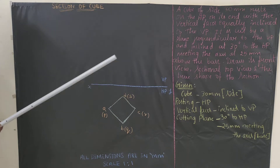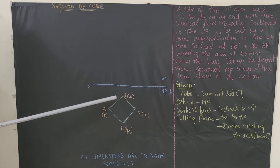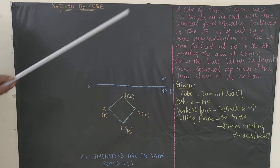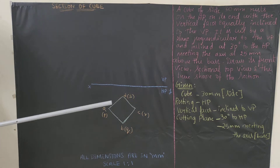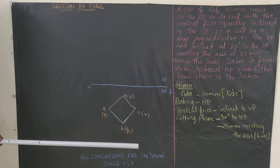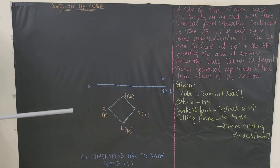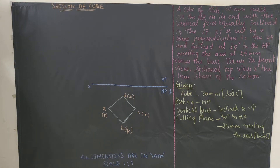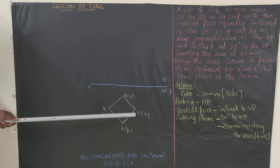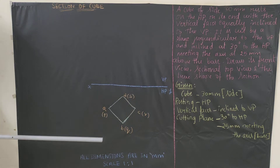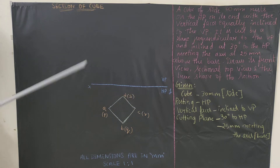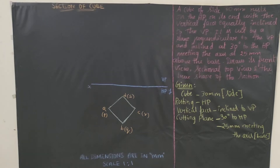Draw the square in type 2 orientation. Since it is a cube, we will have 8 naming points. The topmost surface will be ABCD and the bottommost will be PQRS. Draw the square accordingly with top surface ABCD and bottom surface PQRS. Right now we have drawn the top view. Project all the top view points so we can easily draw the front view.